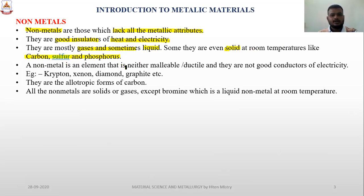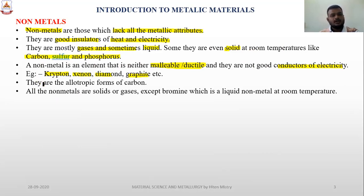A non-metal is an element that is neither malleable nor ductile and is not a good conductor of electricity. For example, krypton, hexanon, diamond, and graphite are good conductors of electricity, but they are still classified in the non-metal category as allotropes or forms of carbon.